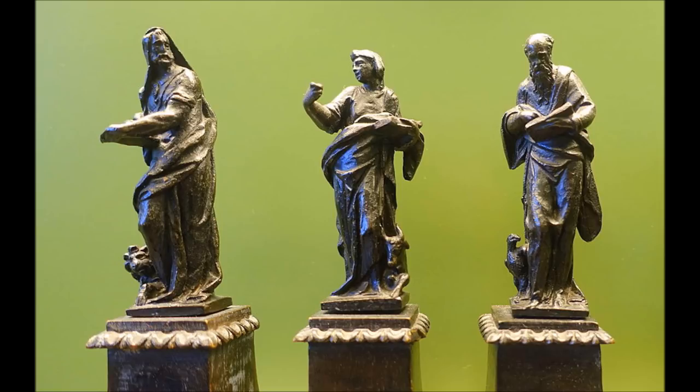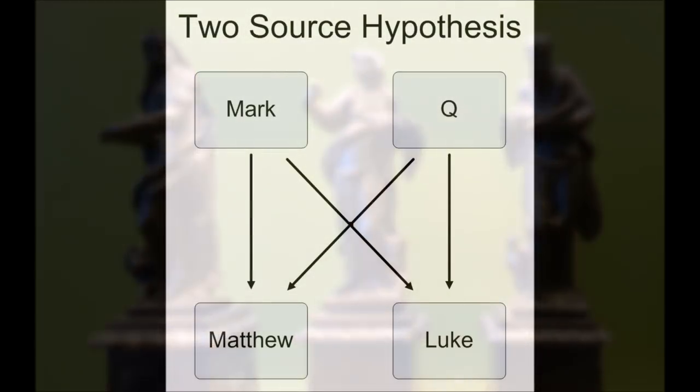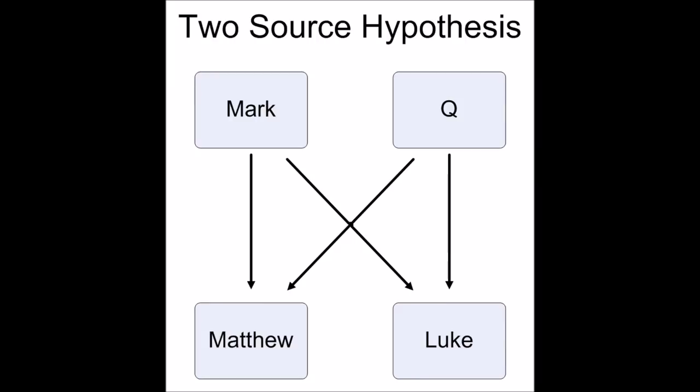Many hypotheses to solve the Synoptic Gospels have been advanced, but a large majority of scholars subscribe to one of four. The most commonly held view is the two-source hypothesis, which holds that Mark was written first, and that Matthew and Luke were written independently of each other, but both copied Mark and another source called Q, which is short for the German word Quelle meaning source. And Q contained, in essence, the double tradition material — that common to Matthew and Luke but not in Mark.